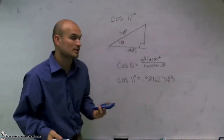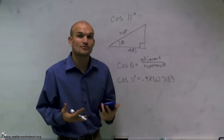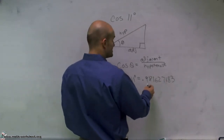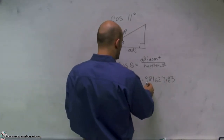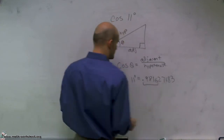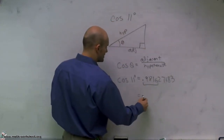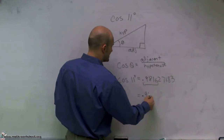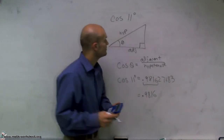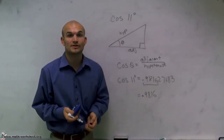That's all that shows up on my calculator. But it says it wants to round to the nearest thousandth, so I'm going to go ahead and take to my nearest thousandth place. Therefore, my final answer is just going to be 0.9816. And there you go, ladies and gentlemen — that's how you find the cosine of 11 degrees.